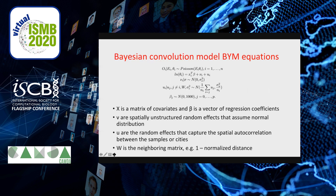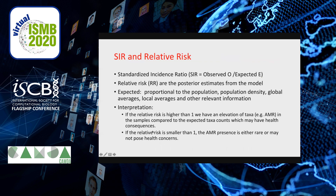The Bayesian convolution model is presented as equation number two, where theta is the relative risk. It is presented as a linear model comprising the design matrix of covariates, a vector of regression coefficients, a spatially unstructured random effect V, and two spatially structured random effects. V is the unstructured random effect with normal distribution, and the other is the random effect for spatial autocorrelation between samples of the cities.